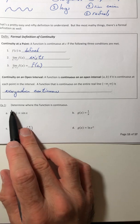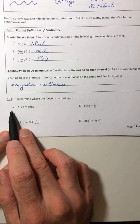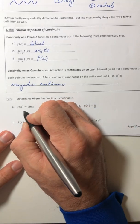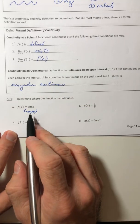All right, example one, determine where the function is continuous. So part a, just talked about it, that is everywhere continuous. So it is continuous from negative infinity to infinity.